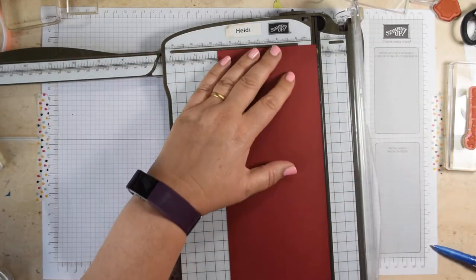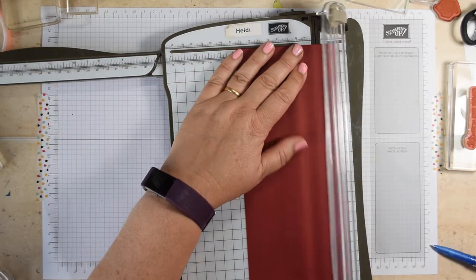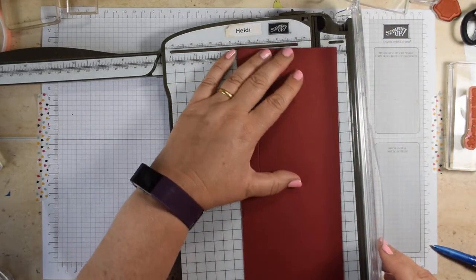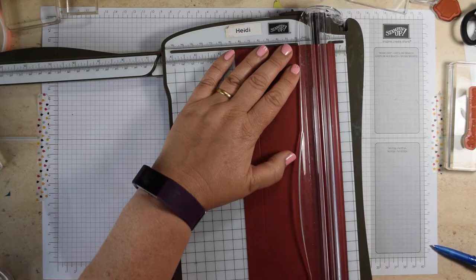And you can start by scoring at two centimeters, flip it round and score again at two centimeters.